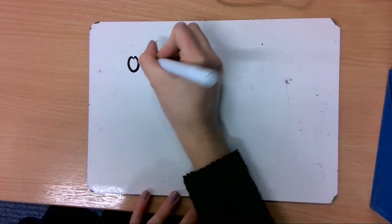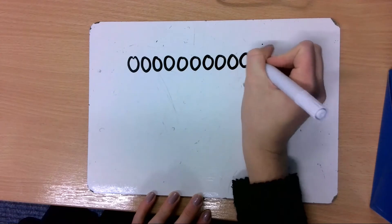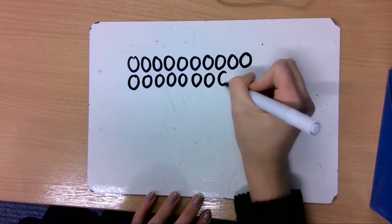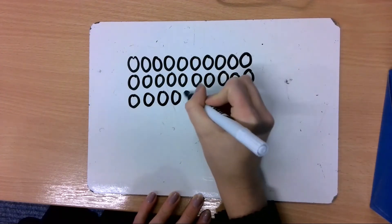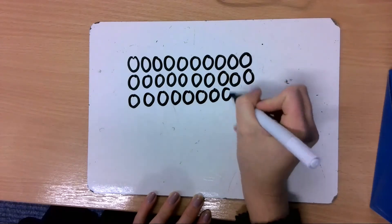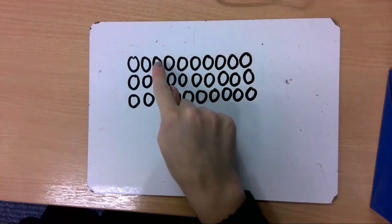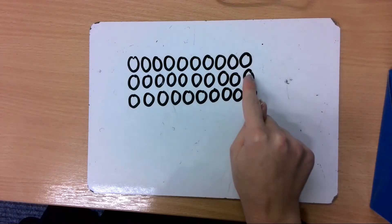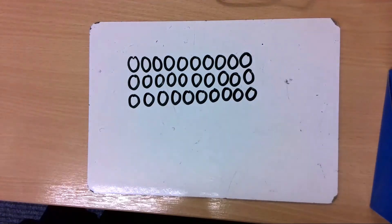1, 2, 3, 4, 5, 6, 7, 8, 9, 10, 11, 12, 13, 14, 15, 16, 17, 18, 19, 20, 21, 22, 23, 24, 25, 26, 27, 28, 29, 30. Ok, once we have drawn 30 circles we just need to do a quick check — whisper count with me. We have 30 all together.